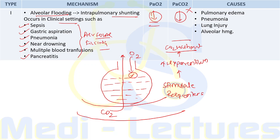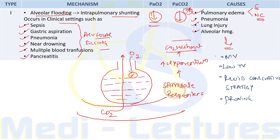This is the only type of respiratory failure in which PaCO2 is also decreased alongside PaO2, due to stimulation of the respiratory center leading to hyperventilation and CO2 washout. CO2, being a diffusible gas, can cross the alveolar barrier even when filled with fluid. Causes include pulmonary edema — both cardiogenic and non-cardiogenic (ARDS) — as well as pneumonia, lung injury, and alveolar hemorrhage.